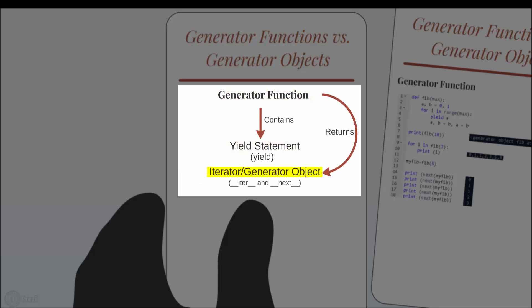An iterator in Python is an object that supports the iterator protocol, which basically means its class must define two special methods: __iter__, which returns itself, and __next__, which returns the next value every time the built-in function next() is invoked on it. I have covered these special methods in one of my other tutorials.